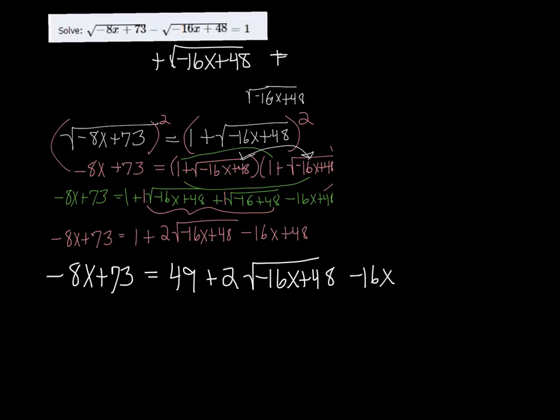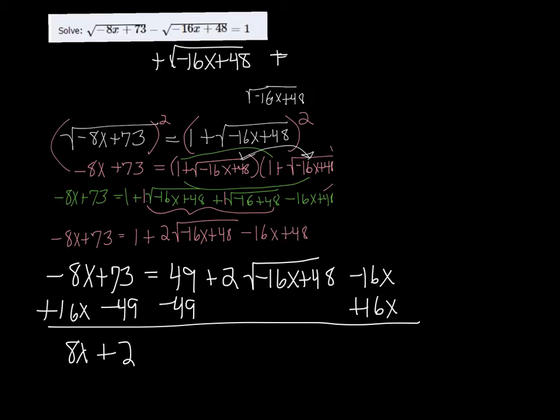And then the minus 16x doesn't have anybody to go with, so it's just going to be out there. So we want to add the 16x to both sides. And we're going to subtract the 49. And when we do those steps, we're going to get a positive 8x plus 73 minus 49, which is 24, is equal to 2 times the square root of negative 16x plus 48.